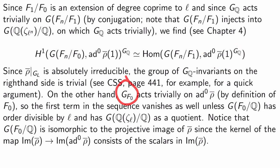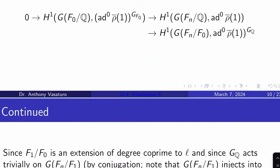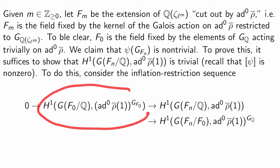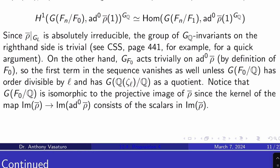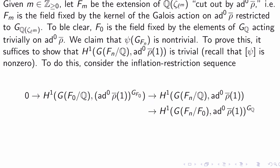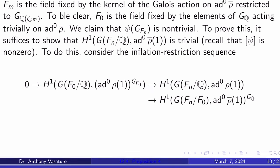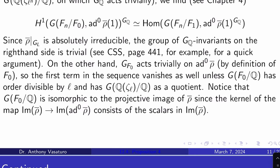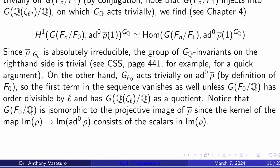On the other hand, Gal(F_0) acts trivially on ad^0 rho-bar by definition of F_0. So the first term in the inflation-restriction sequence also vanishes, unless Gal(F_0/Q) has order divisible by L and has Gal(Q(ζ_L)/Q) as a quotient. So this first term is usually trivial, unless exactly the conditions needed to make it non-trivial occur. Note that Gal(F_0/Q) is isomorphic to the projective image of rho-bar, because the kernel of the map from the image of rho-bar to the image of ad^0 rho-bar consists of scalar matrices.